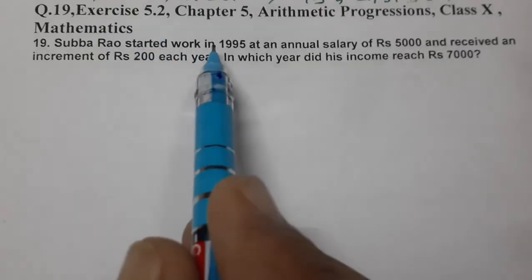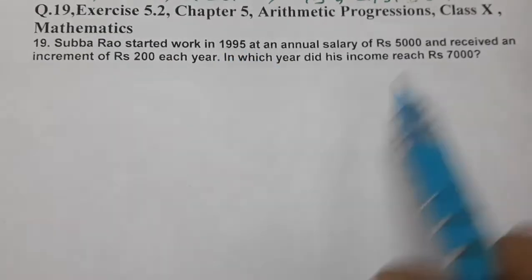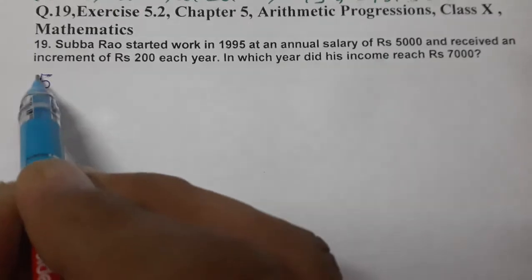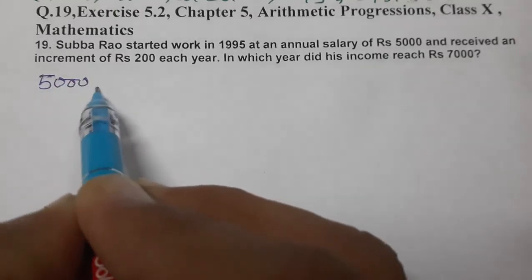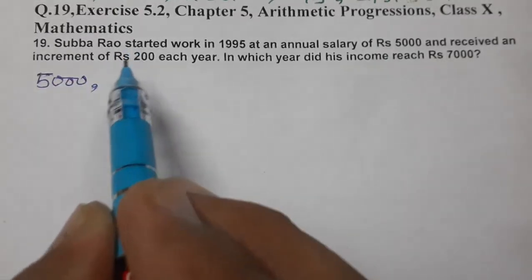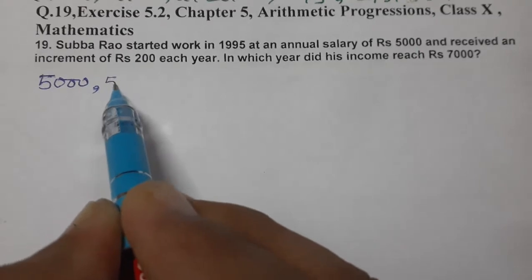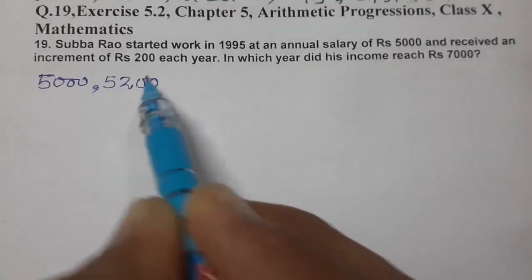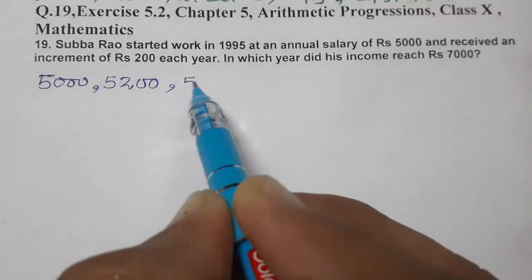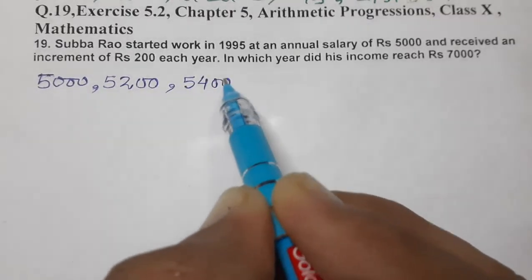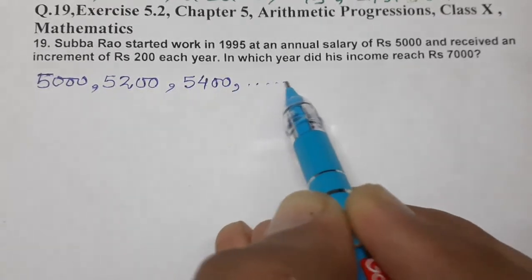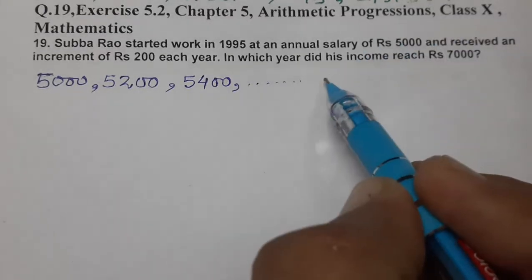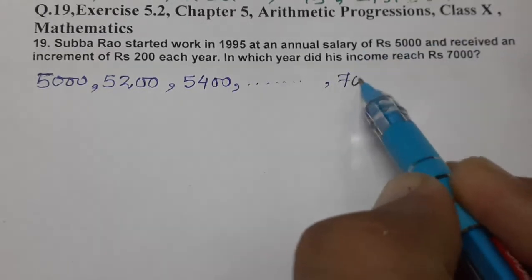So, Subba Rao ne kya kira? Work start kiya 1995 mein. Aur kya thi salary? 5,000. 5,000 se starting hui. Aur har saal Rs. 200 ka increment mil raha hai. Means next year salary ho jayegi 5,200. Us ke next year 5,400 ho jayegi, and so on. And we need to find out ki Rs. 7,000 kaunse year mein ho jayenge?